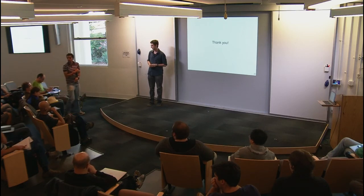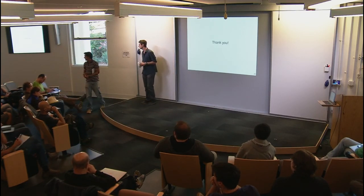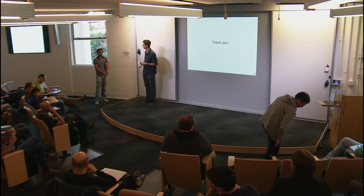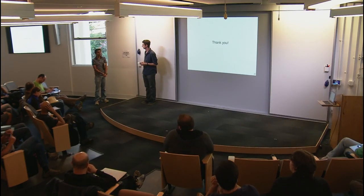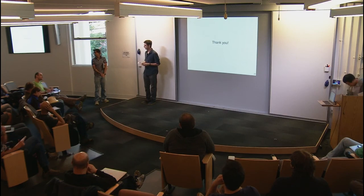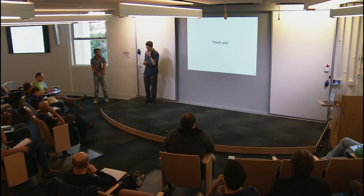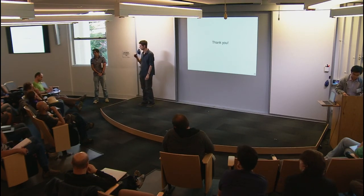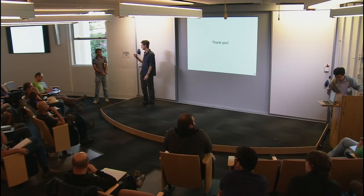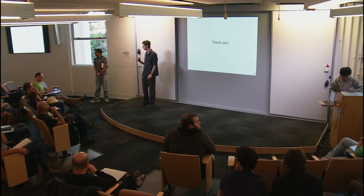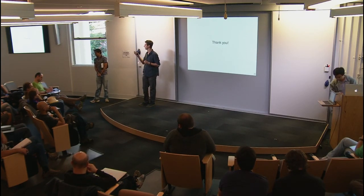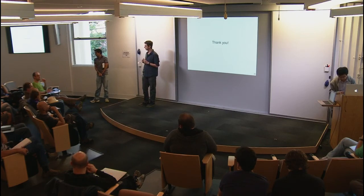We have time for a couple of questions. Can you even simulate a monotone threshold function in monotone NC1, like with monotone formulas? Actually, we spent a lot of time working on this project. This was one of our original goals, and we couldn't establish this lower bound. This can be seen as a weaker separation that is related to your question. It's still open.